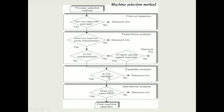Next is capability analysis — you assess whether the machine is capable for the particular operation. If yes, you proceed to operational analysis: does the machine meet the economic batch quantity? If you can produce the batch quantity economically, that machine is selected. This is the layout diagram for the machine selection method. Tool selection method will be discussed in the next class.